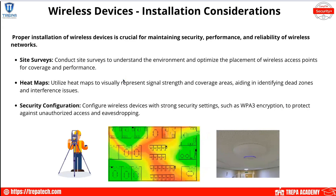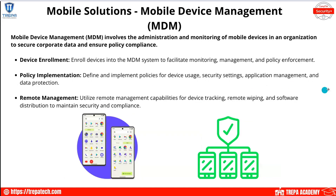With our site surveys, we want to do this to understand the environment and optimize the placement of wireless access points. Then the heat maps we're going to use to visually represent signal strength throughout our environment, our office, or compounds.